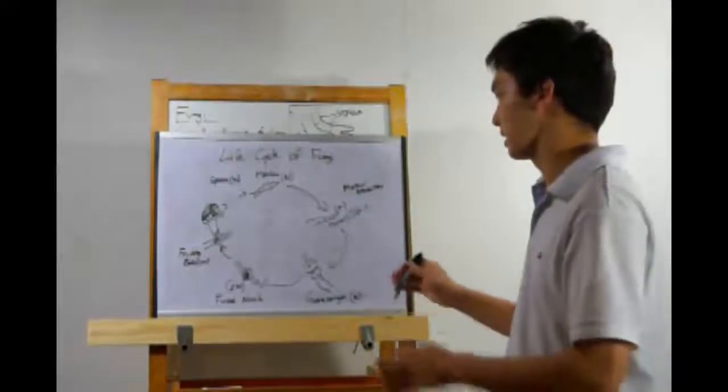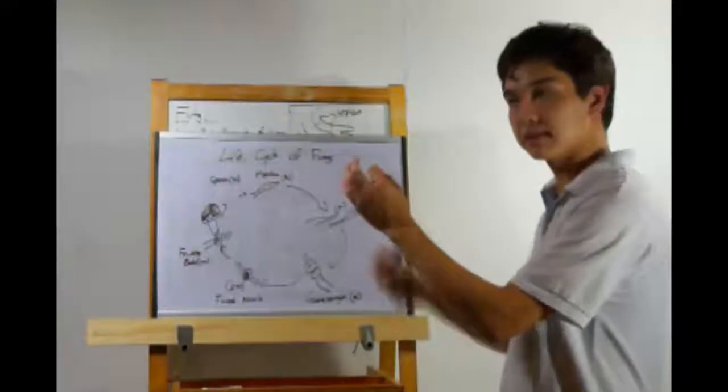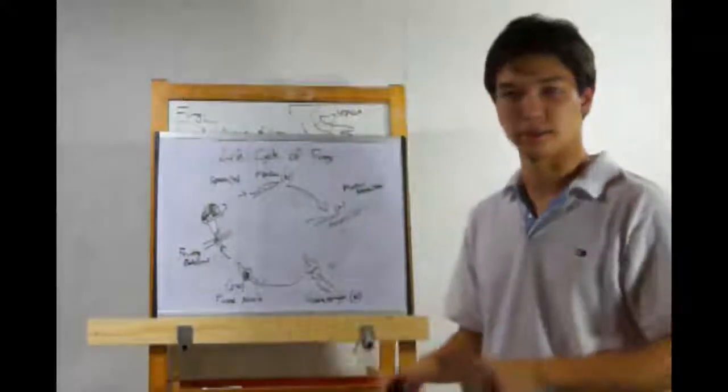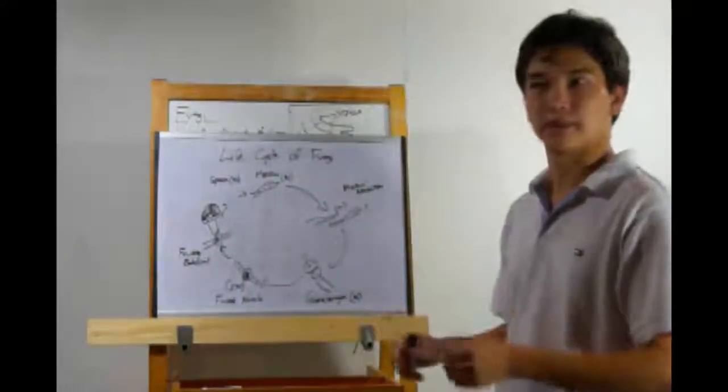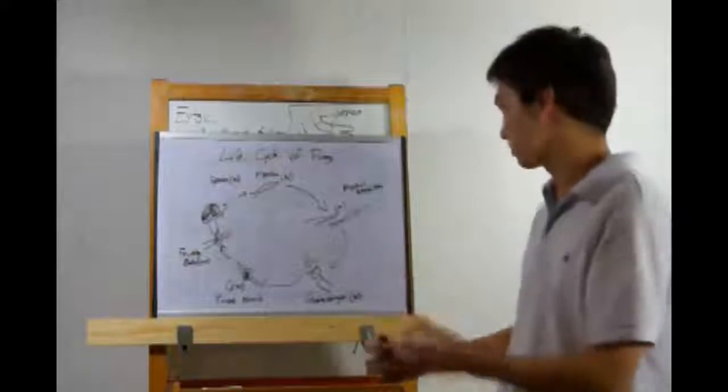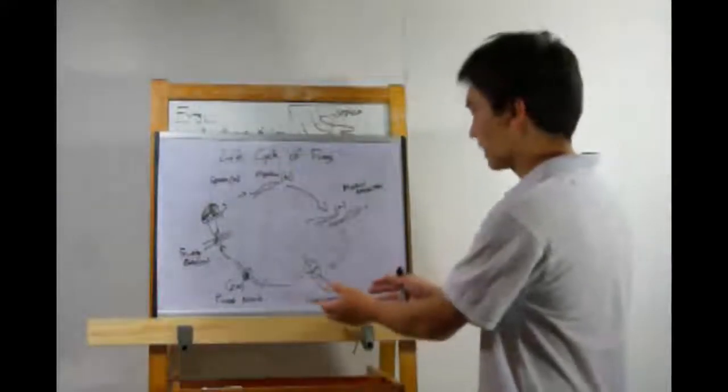So then two mycelia will meet up, and one will have to be a plus, the other will have to be a minus. These are effectively genders of mushrooms, but it's really hard to say one's a male and the other's a female, so we call them plus and minus. Then they'll form gametangia.